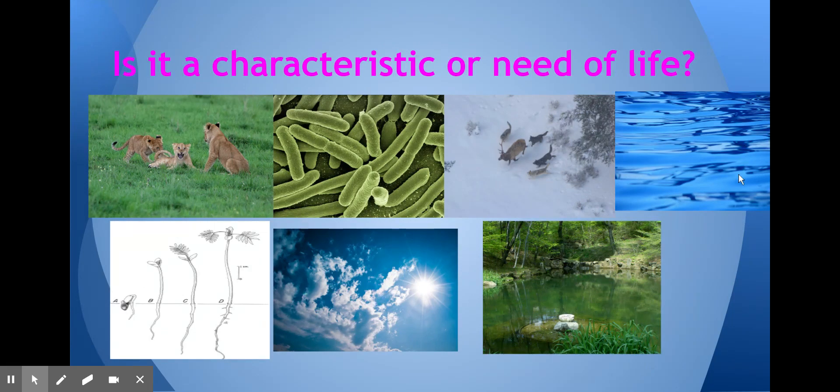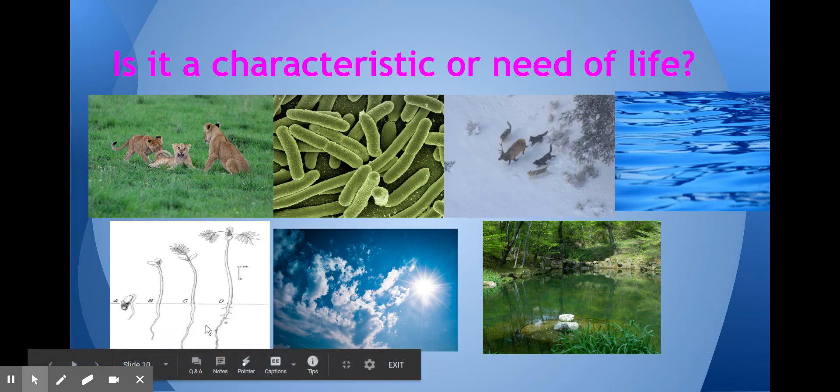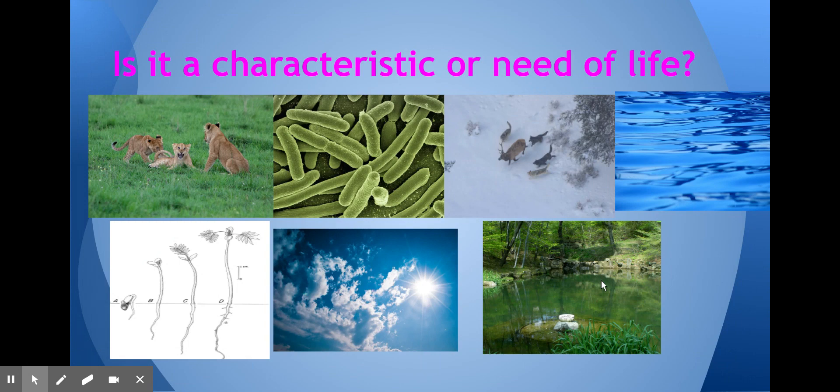What about this picture? Is it a need or is it a characteristic? That's water. It's a need of life. Here, we have a bean seed growing, that is grow and develop. Here's sunlight. Well, that must be energy. And finally, you have a pond in the forest. So that has to be living space.